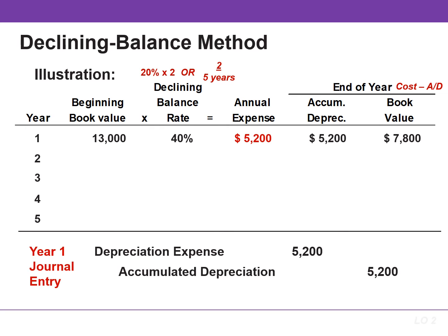Book value for the second year is $7,800. This is the difference between the cost of $13,000 and the accumulated depreciation at the beginning of the year of $5,200. The depreciation rate is 40%, so the depreciation expense in year two is $3,120. This is found by multiplying the book value of $7,800 by the rate of 40%. Accumulated depreciation will increase by $3,120 and the book value will decrease by the same amount.